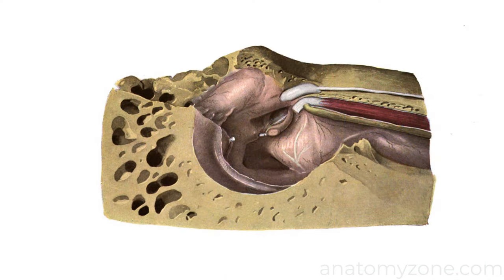I've just switched over to an illustration which shows the same view as the 3D schematic, and let's take a look at how these structures appear anatomically. In this dissection we're looking into the ear from a lateral view, looking directly at the medial wall. Just like the model, this side is anterior and this side is posterior.